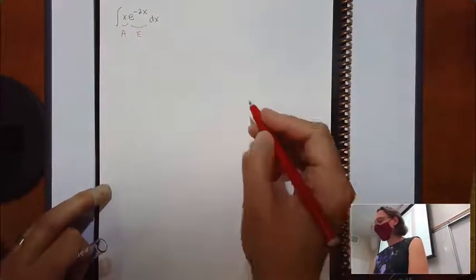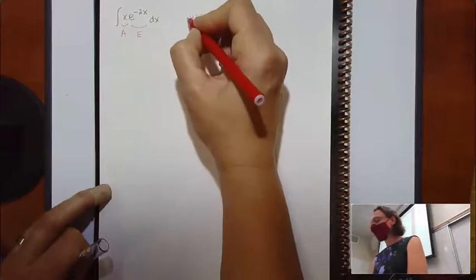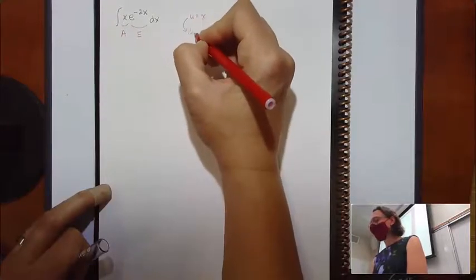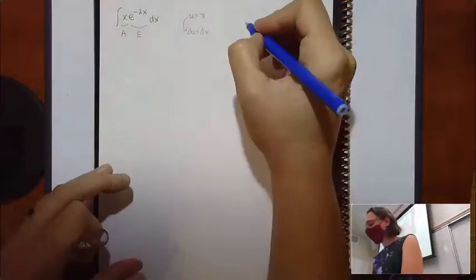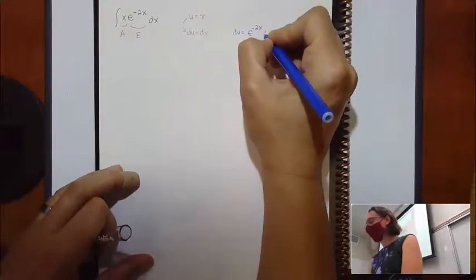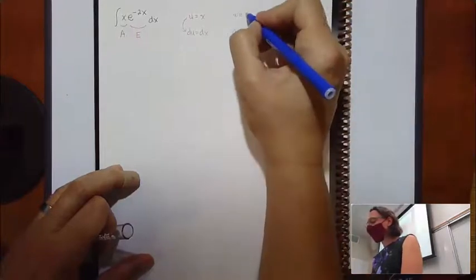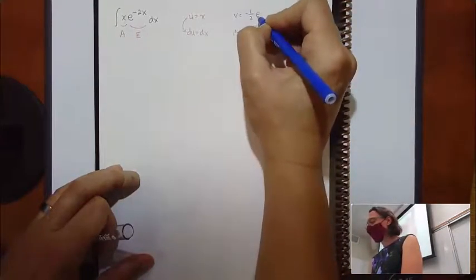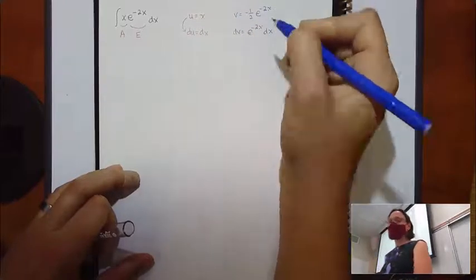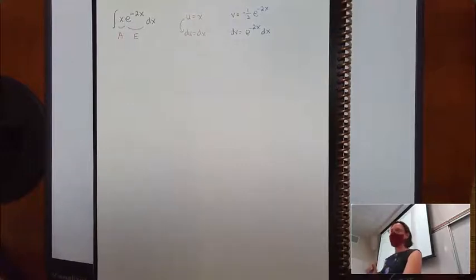A comes first in the word LATE, so for me u would be x, which makes my du = dx. And dv would be everything else, which is e to the negative 2x dx. That makes v = negative one half e to the negative 2x. I'm totally happy to show that with a substitution if anybody needs it, but that's what we're going to get.